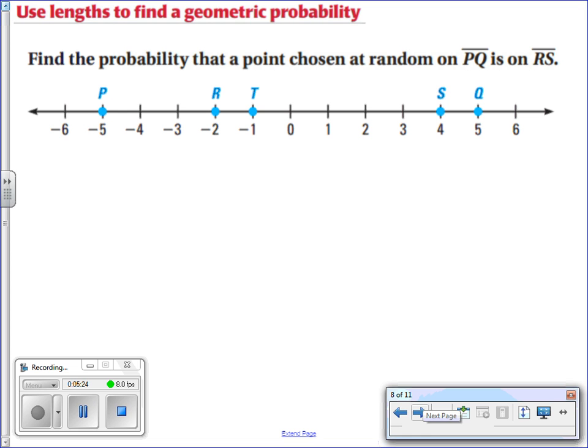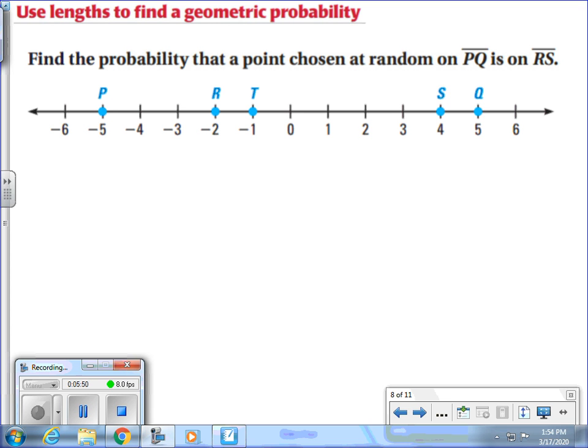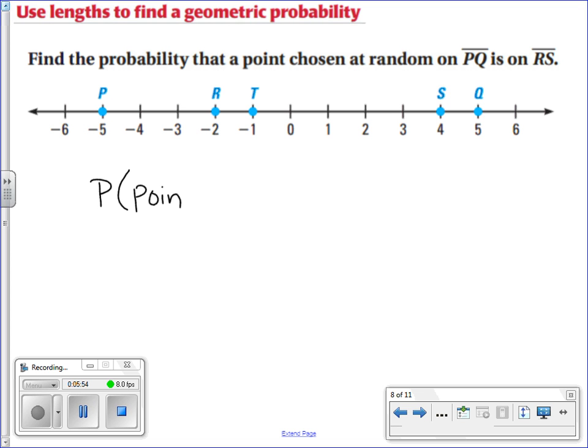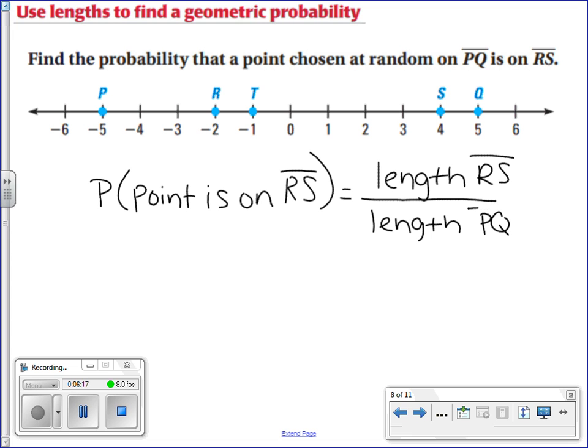Let's try something a little bit more difficult. So we'll use lengths to find a geometric probability. We want to find the probability that a point chosen at random on segment PQ is on segment RS. Well, that would mean we need to figure out what is the length of segment RS, and we're going to divide that by the length of segment PQ.